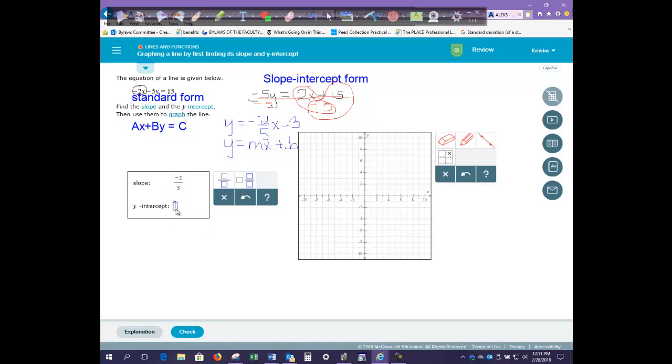And our y-intercept is the b part, whatever we add or subtract onto this function. So here we're subtracting 3, so our y-intercept is negative 3. In order to graph, you need to first graph your y-intercept. So your y-intercept tells you where your graph crosses the y-axis. And we place our first point there at negative 3.